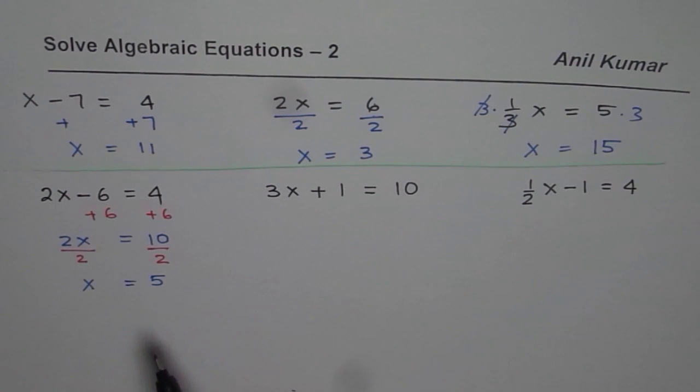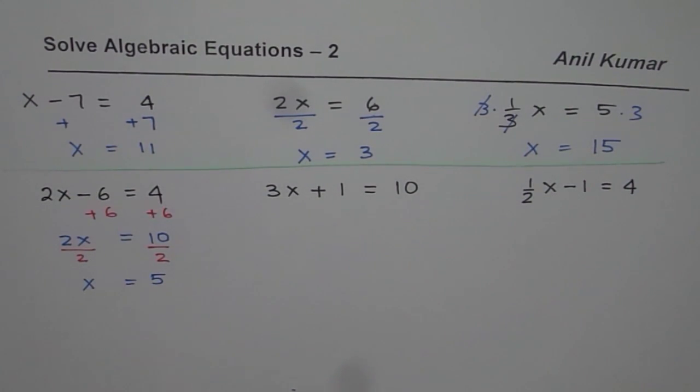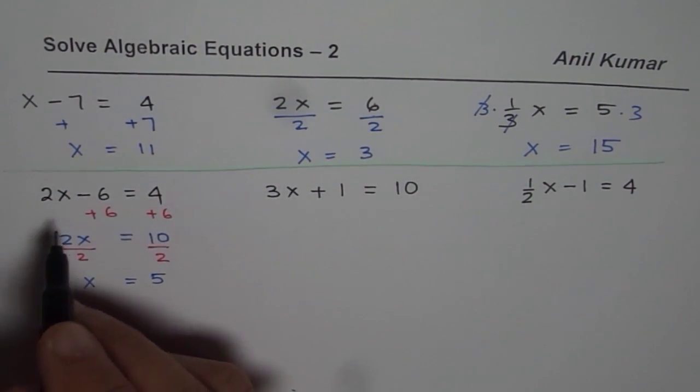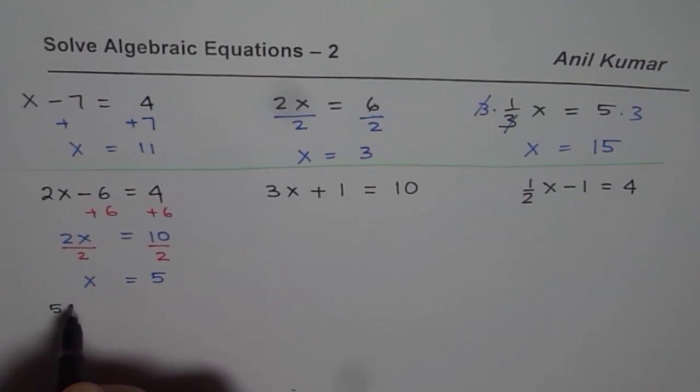Now for you to practice let me give you a question here which is similar. You can write this as 5 of x minus 3 equals, let's say, 12. Find the solution for this one.